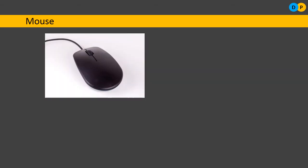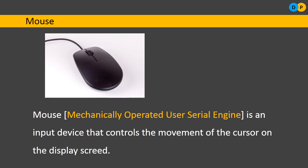Most of you have seen a mouse. It is just a small device connected to the back of the computer via a cable. The mouse is actually an abbreviation — it stands for Mechanically Operated User Serial Engine. It is a pointing device using which you can precisely pinpoint a certain location over the screen, and we can control the movement of the cursor easily with the help of a mouse.